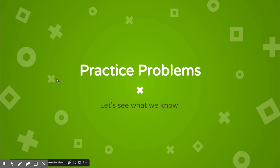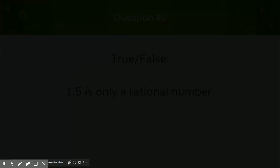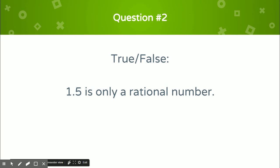Now we've got some practice problems. As you go through these, take a couple minutes to practice and check. Question one: true or false — negative four is a rational number, integer, and whole number. Write this down in your notes or keep track, then answer it. Pause the video and answer this question. Question two: true or false — 1.5 is only a rational number.